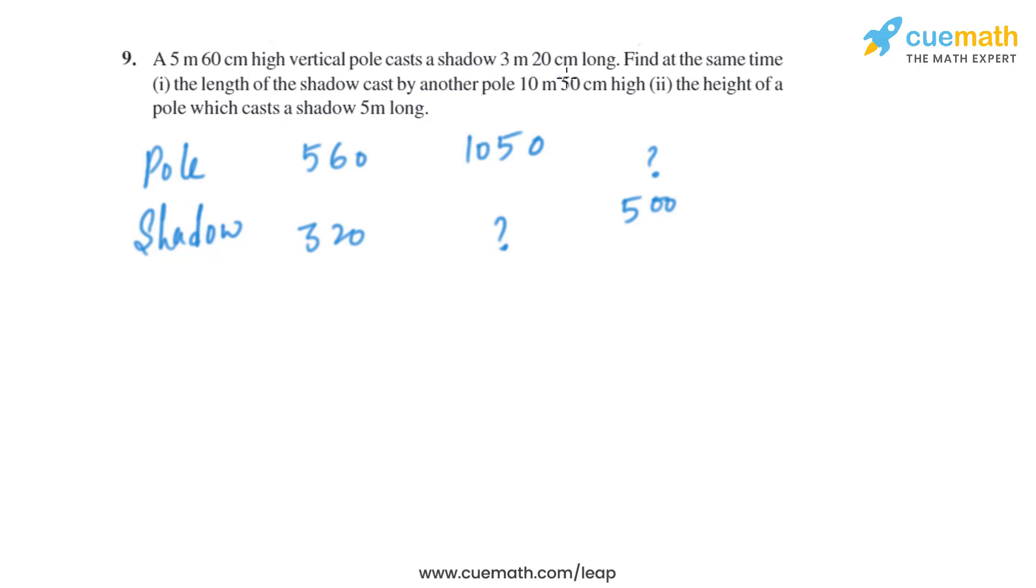When the height of the vertical pole will increase, the length of the shadow will also increase, which means they are in direct proportion. So let's take it as a and take it as b, and let's write the length in centimeters.